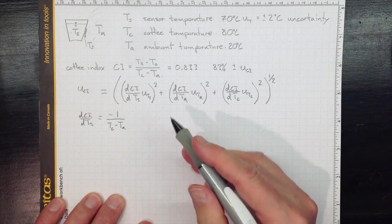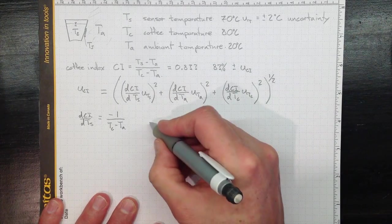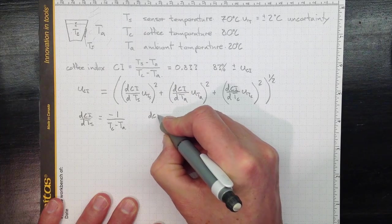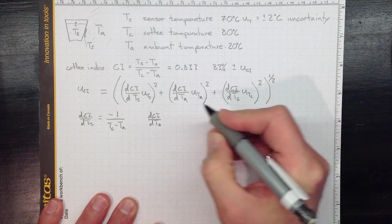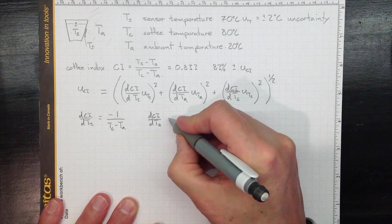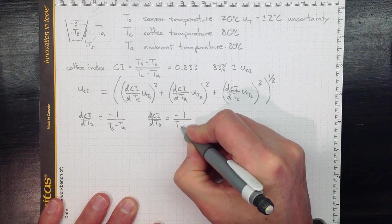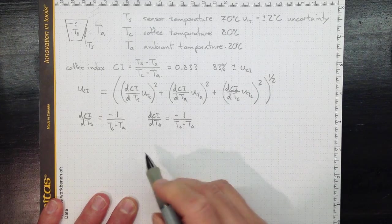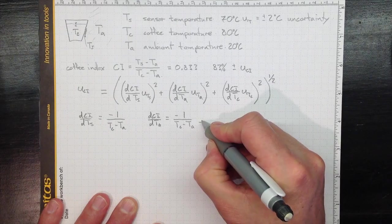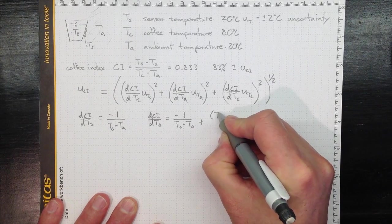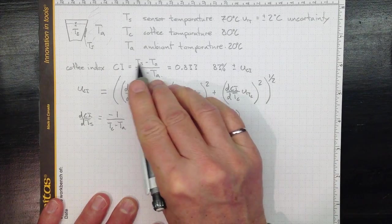The one with respect to ambient temperature, ambient temperature appears twice. And I needed to take a little time to do my calculus, but once I went back to my first year calculus, this is what I got. Negative one over TC minus TA, that came from this negative TA up here, plus TS minus TA, those terms there,